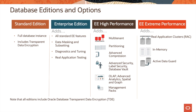Finally, with Enterprise Edition Extreme Performance, you get everything in Enterprise Edition High Performance, plus Real Application Clusters, the In-Memory option (available in database 12c and higher), and Active Data Guard. Thanks for watching this video.